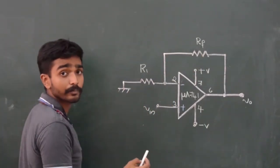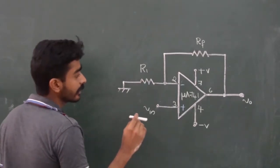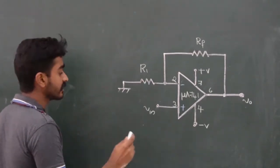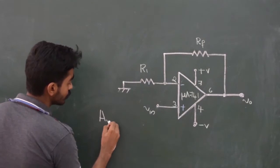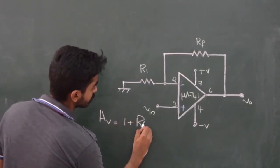The gain of the op-amp configured in non-inverting mode is given by AV equals 1 plus Rf by R1.